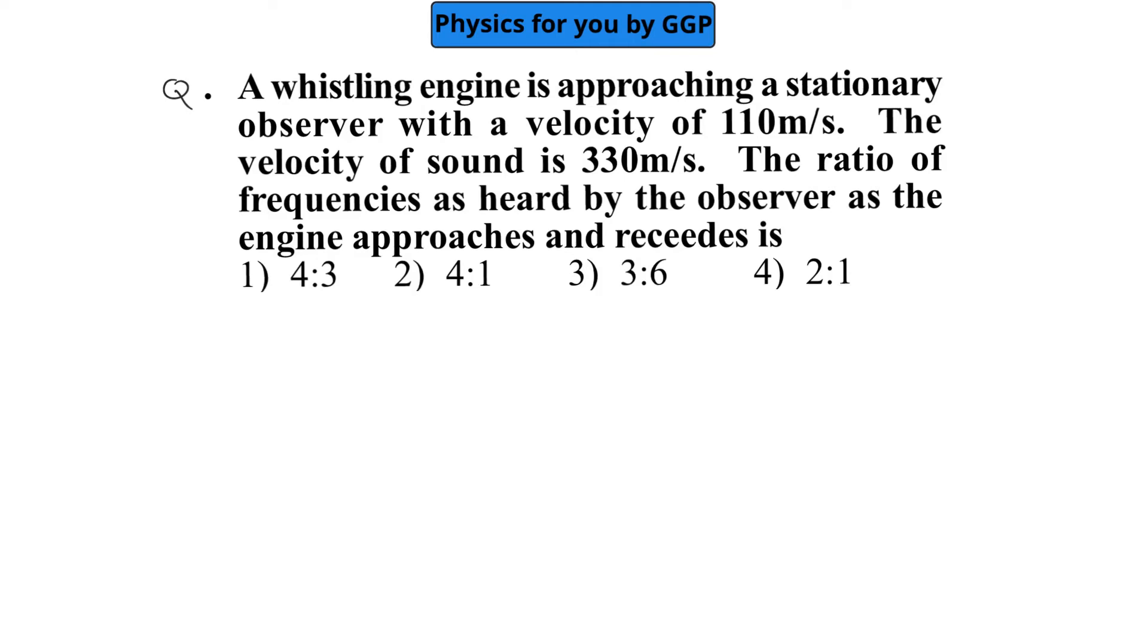It is given that a whistling engine is approaching a stationary observer with a velocity of 110 meters per second. The velocity of sound is 330 meters per second. The ratio of frequencies as heard by the observer as the engine approaches and recedes is to be found.